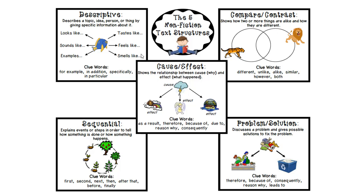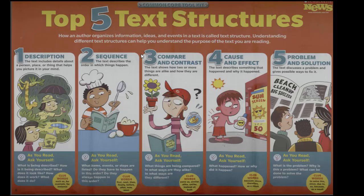Be careful, because problem and solution and cause and effect can be very similar — it can be very tricky. Again, the five text structures are: description, sequential, compare and contrast, cause and effect, and problem and solution. In sequential, you can also hear 'chronological' — they have two different names: sequencing, sequential, chronological. Remember we talked about timelines as a text feature, and you're going to find those a lot in sequential.